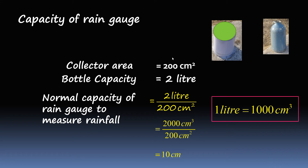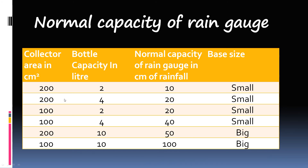So this rain gauge, with a collector area of 200 centimetres square and a bottle capacity of 2 litres, can store a 24-hour rainfall of 10 centimetres. Similarly, you can calculate for 4 litres or with different collector areas. This gives the normal capacity of the rain gauge in centimetres of rain.